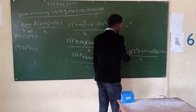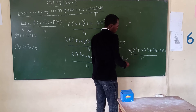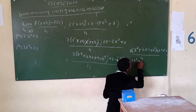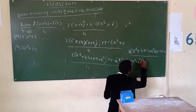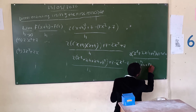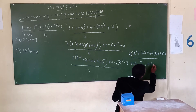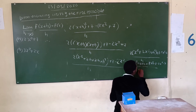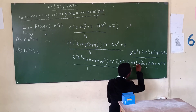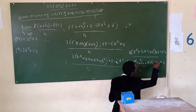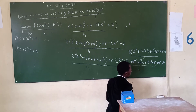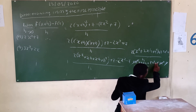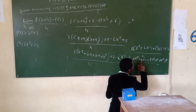Multiplying through by 2 we get 2x squared plus 4xh plus 2h squared plus 7 minus 2x squared minus 7, over h. Now the 2x squared terms cancel, and the 7 and minus 7 cancel, so we are left with 4xh plus 2h squared over h.